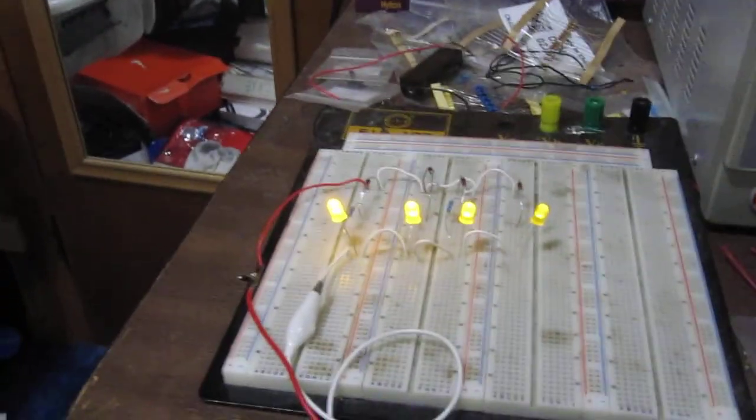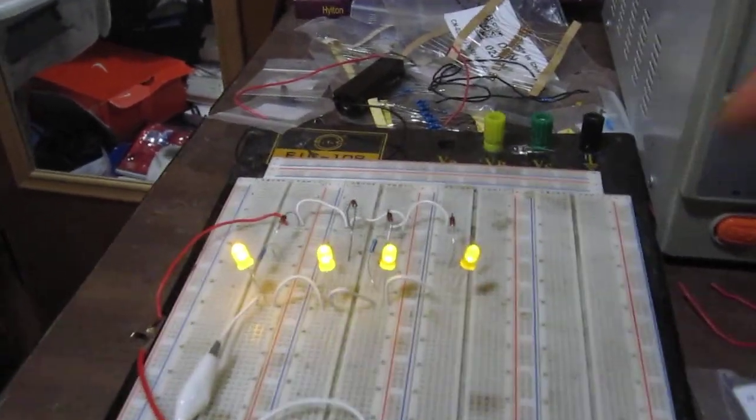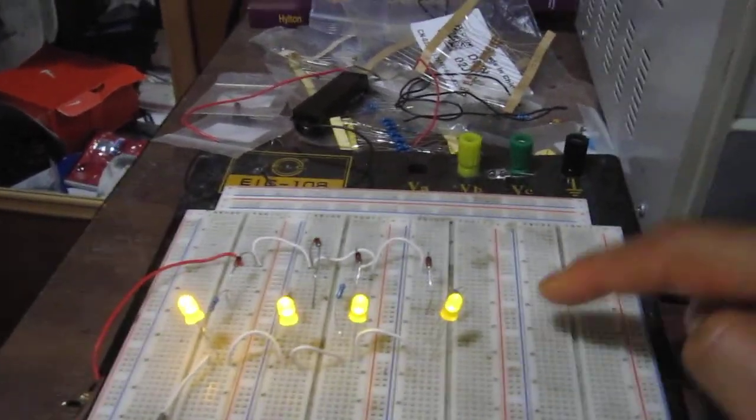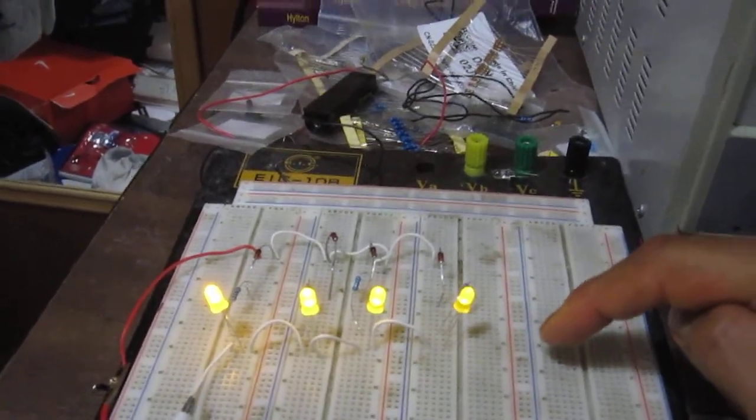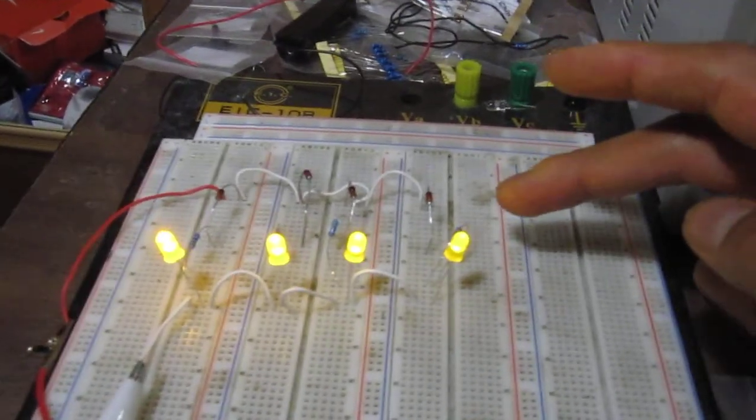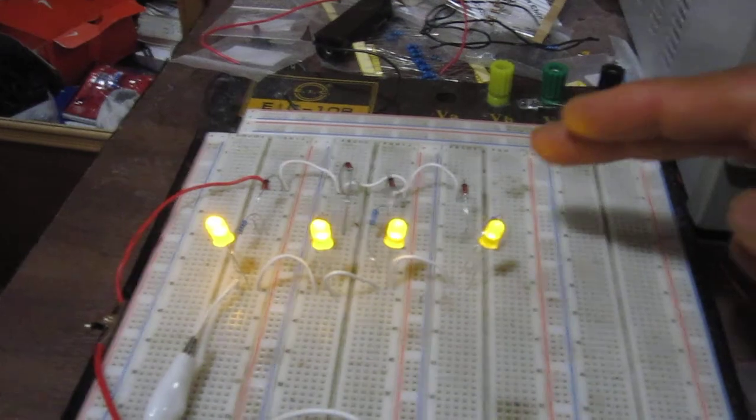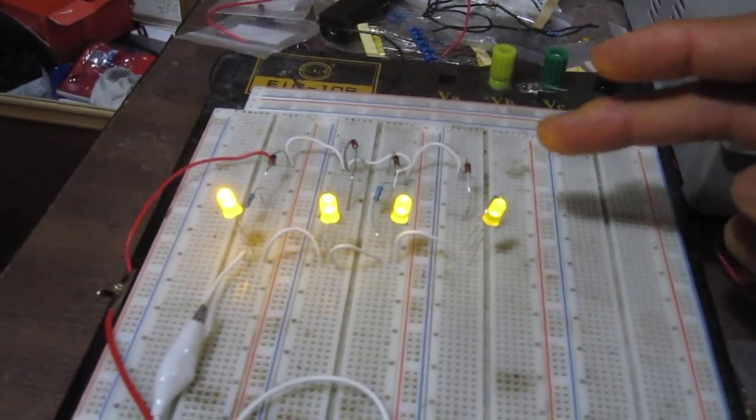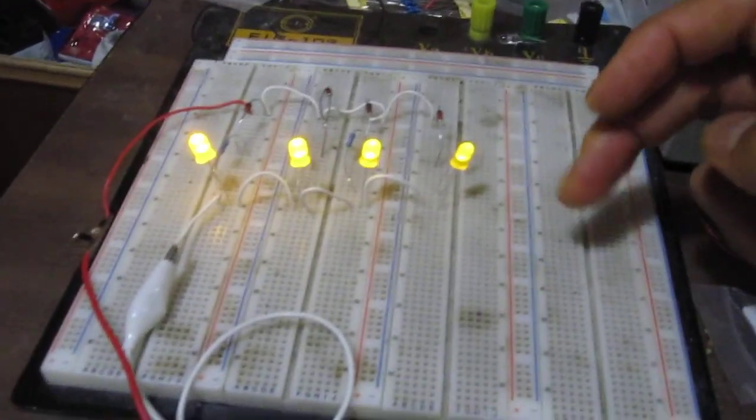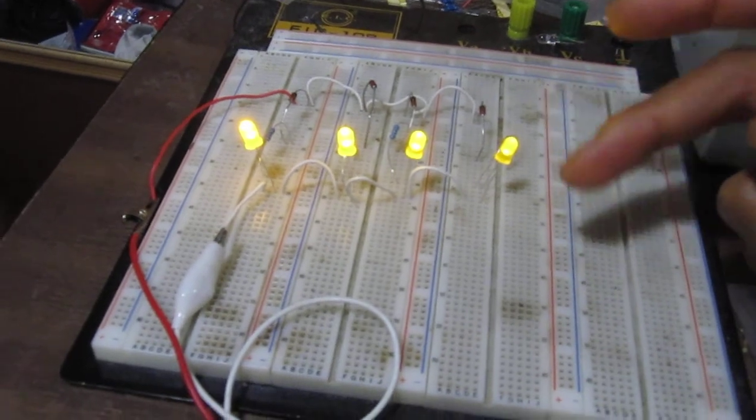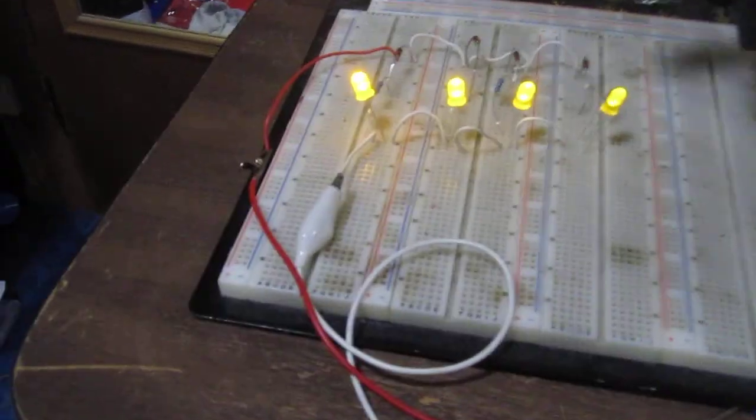This is how you can use zener diodes to function as a voltmeter. Use different breakdown voltages for the zener diodes as you need, whatever value you want to record. In this case, this is 3 volts.